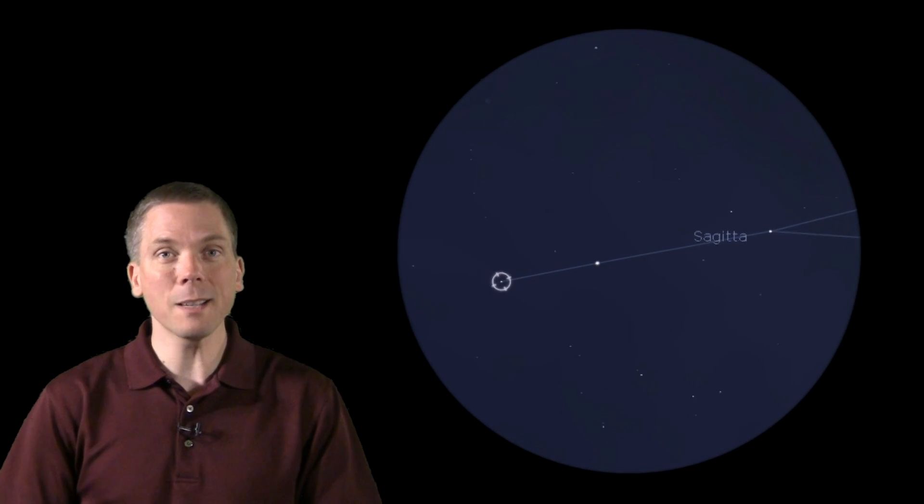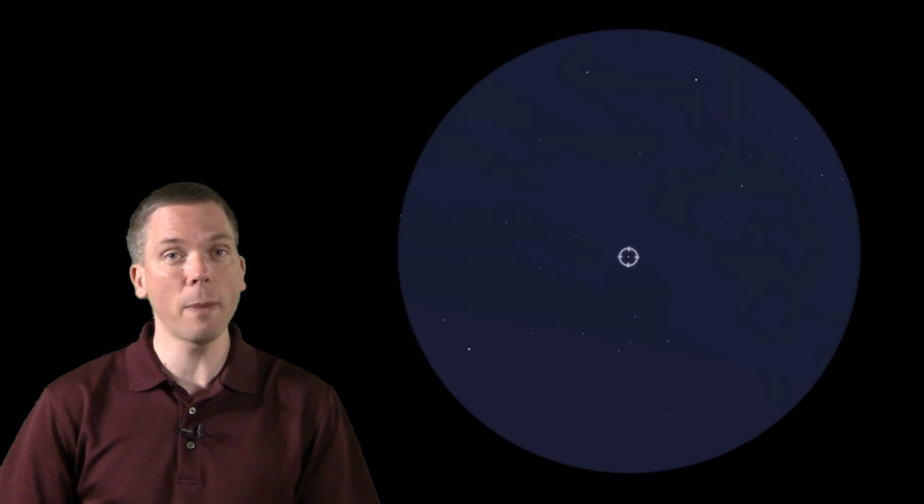Moving with the arrow, estimate just under that, about 5 degrees, and you will be at this 5.7 magnitude star in Vulpecula.